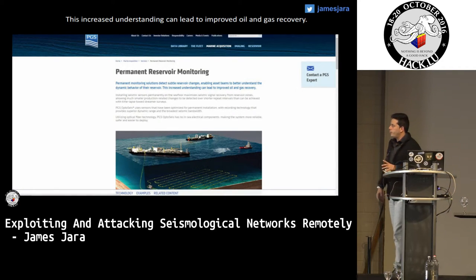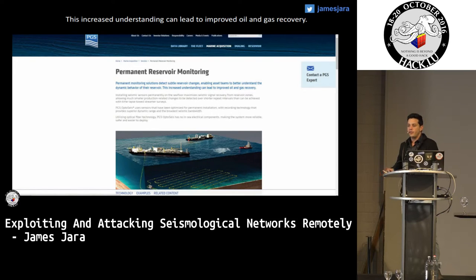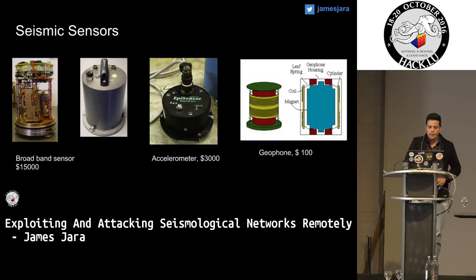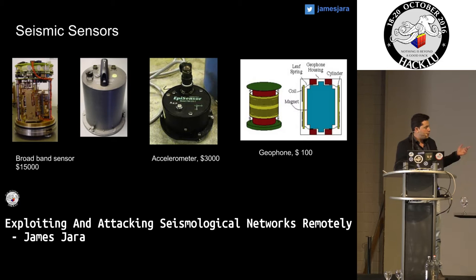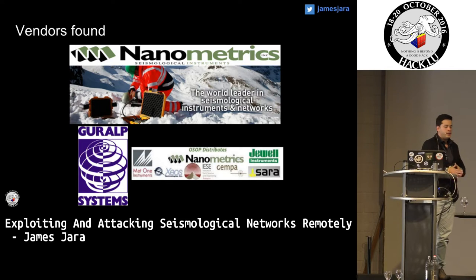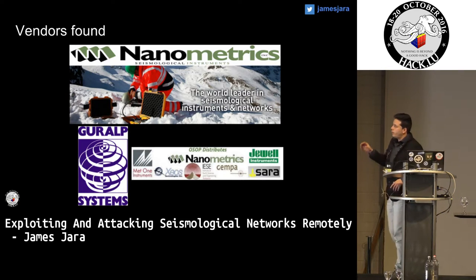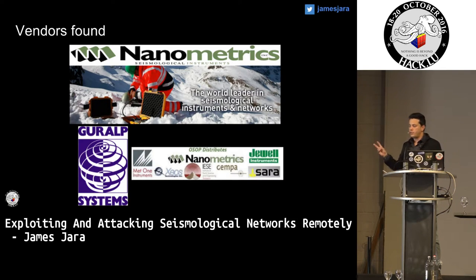This slide is very important because the sensors work also for oil and gas recovery. There are companies that use the same sensors for earthquake detection and for research of oil and gas. These are how they look — they are really small. We have the broadband sensor, the accelerometer, and the geophone. Which are the vendors in this space? We have a lot of vendors, but Nanometrics claims to be the number one in the industry, and then we have the Guralp system. Our research is on top of these two vendors.